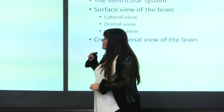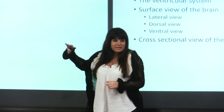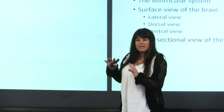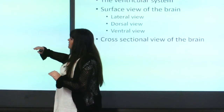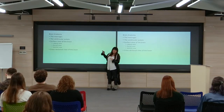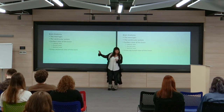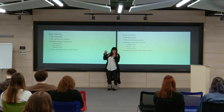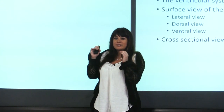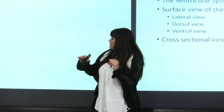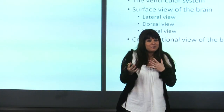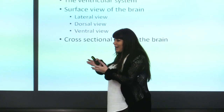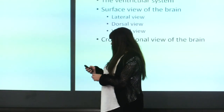First we'll talk about the meninges and the ventricular system — these are the introductory part of real brain anatomy. Then I'll talk about different anatomical sections of the brain — cross-sectional views as well as surface anatomy from different angles such as lateral, dorsal, or ventral view. Each time, the same structure looks very different depending on the angle from which you look at it.